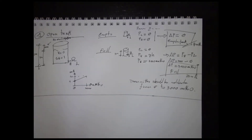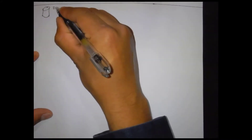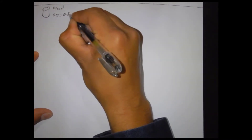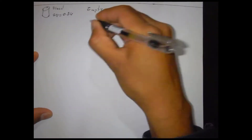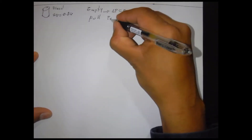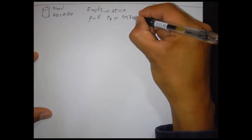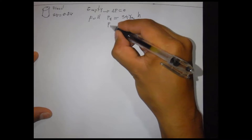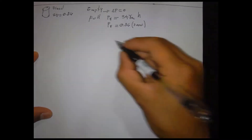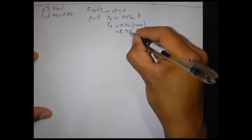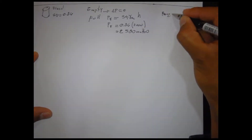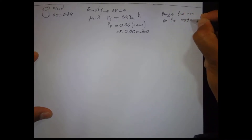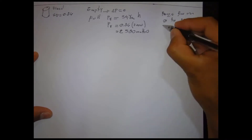We develop the same example, but in this case the tank is full of diesel. We consider a specific gravity equal to 0.86. If the tank is empty, the differential pressure read by the transmitter is zero. When the tank is full, the differential pressure will be equal to 2580 mm of water. The transmitter should be calibrated from zero to 2580 mm of water.